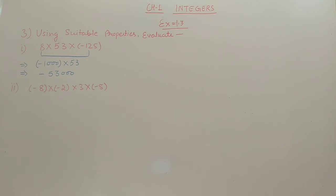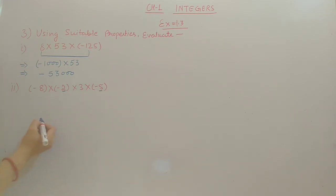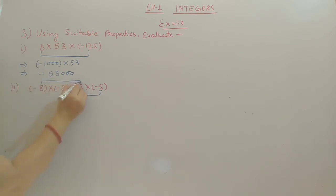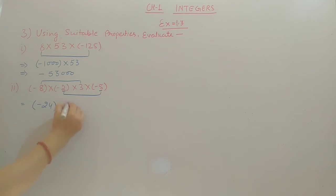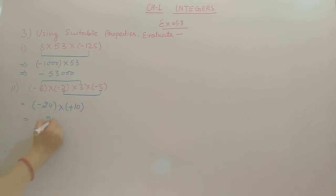Second part: minus 8 into minus 2 into minus 3 into minus 5. We will change the order of multiplication. Wherever you see 5, multiply with an even number — here 2 is there, and 2 into 5 gives 10. So multiply 8 into 3 first: minus 8 into minus 3 gives plus 24, but with the sign consideration the result is minus 24. Then minus 2 into minus 5 gives plus 10. Finally minus 24 into 10 gives minus 240.